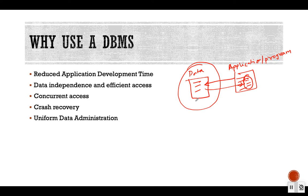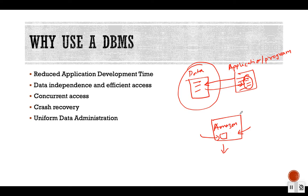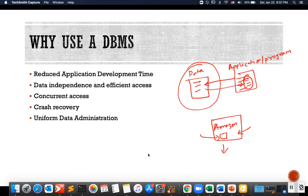Another important aspect of using a database management system is that it handles concurrent access. Think about Amazon — it has millions of users all using the website at the same time. Multiple users are concurrently accessing the same product. When the same product is being accessed by different users concurrently, the DBMS provides the facility to manage that access correctly and give users the right way to access the product.